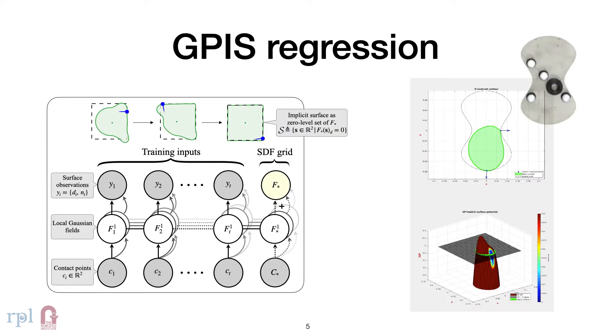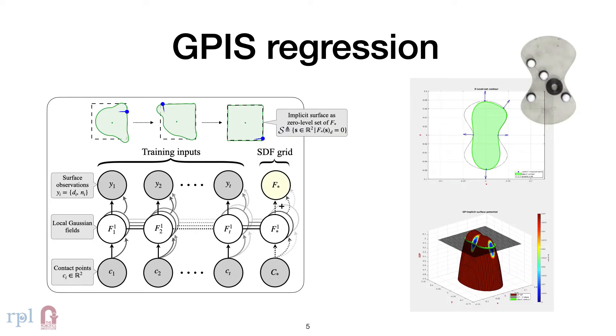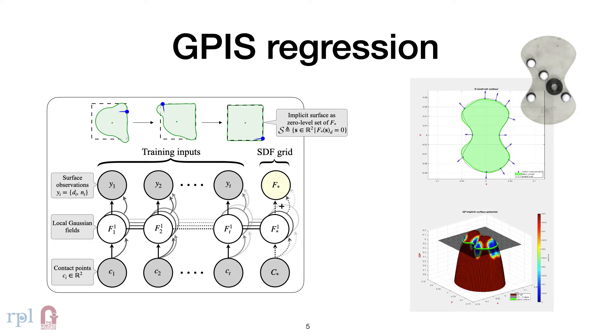A GPIS is an implicit surface representation that uses a GP as its potential function. We perform regression between contact points to the signed distance field value and sensed normal directions.